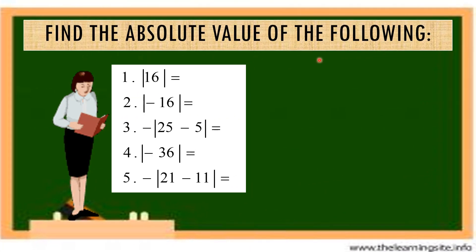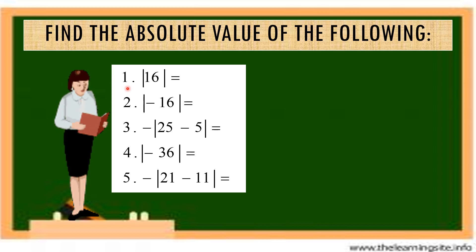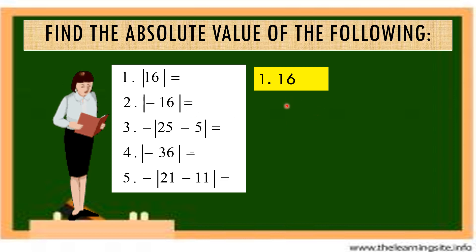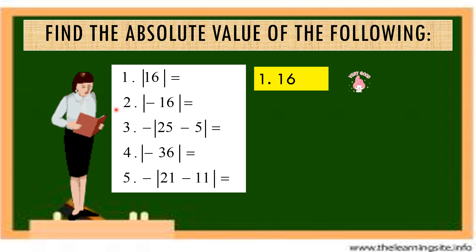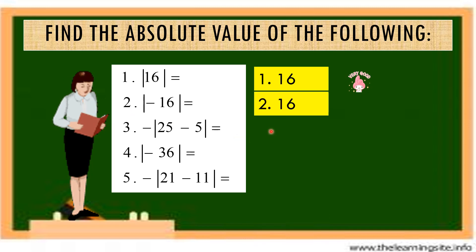We need to find the absolute value of the following. Number 1: the absolute value of 16. The answer is 16. Did you get it correct? Very good. Number 2: the absolute value of negative 16. The answer is still the same — 16. Very good class, you got it correct.